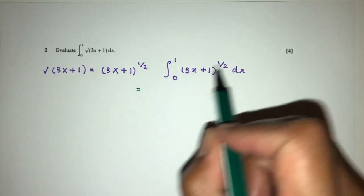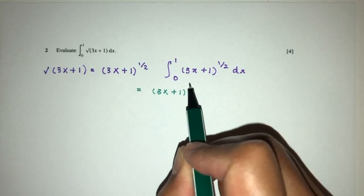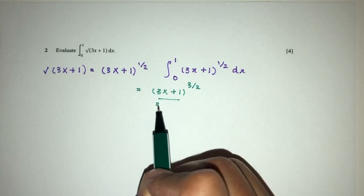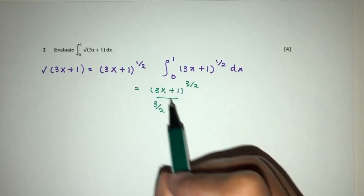Now step by step, the first thing you will have to do is to increase the power by 1. You will have 3 over 2. Then divide by 3 over 2. Then multiply by d by dx of the value inside that will be 3.